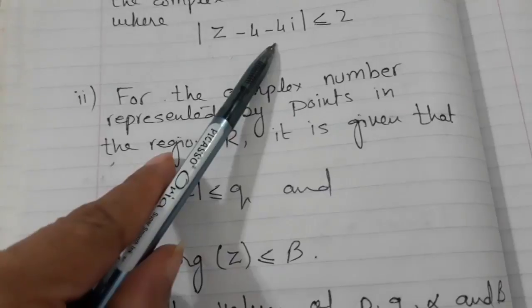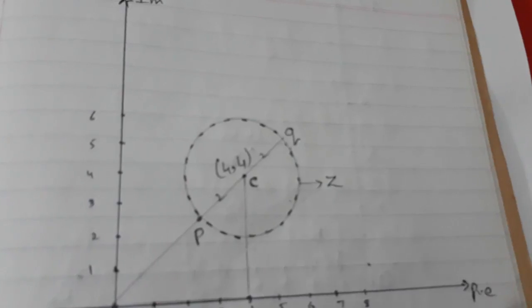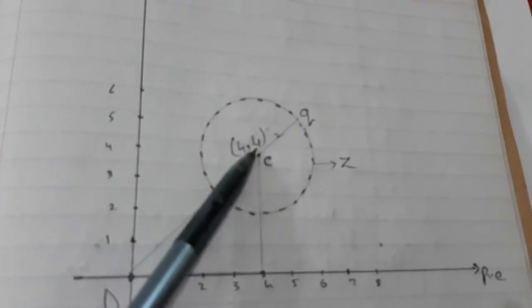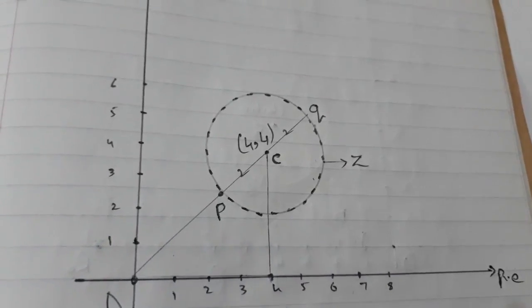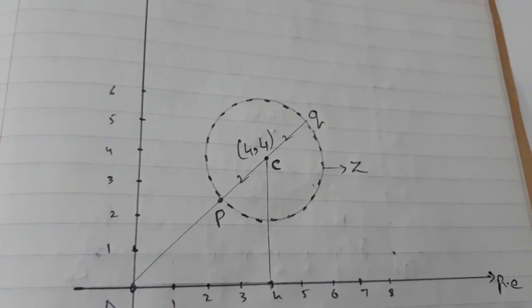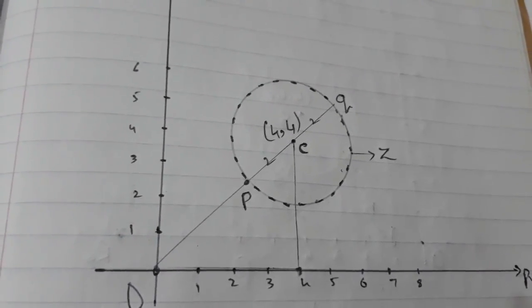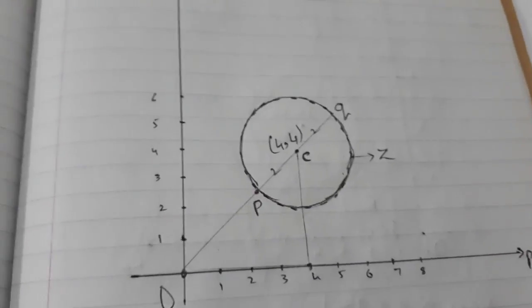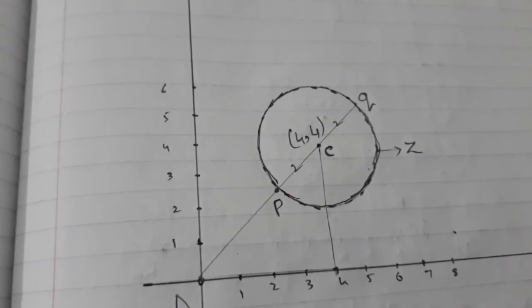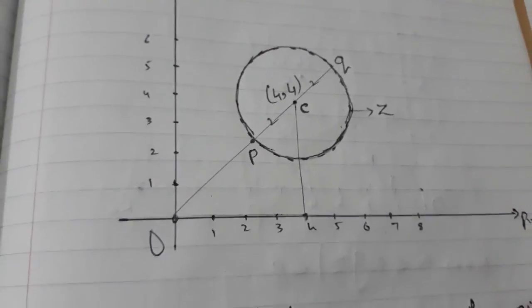First, we sketch the complex locus: Z minus four minus four iota less than or equal to two. Here is the center of the circle and the radius is two. Because it was less than or equals to, I should not draw a dotted line — it should be a solid line. So I have drawn a locus of a circle with radius two and center four comma four iota.